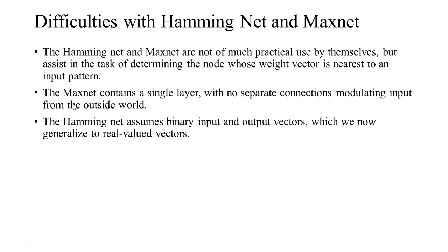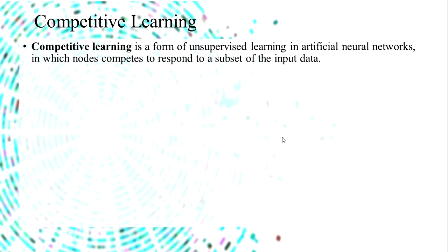Another difficulty with the Hamming net is that it assumes binary input and output values — plus one and minus one. In reality, inputs may not always be plus one and minus one, so it needs to be generalized to real-valued vectors. This leads us to competitive learning, which is a form of unsupervised learning.